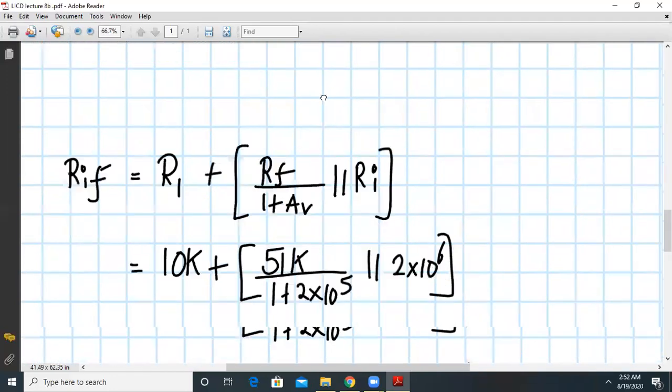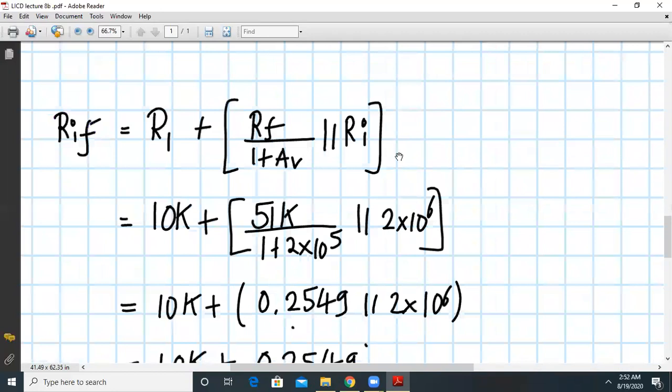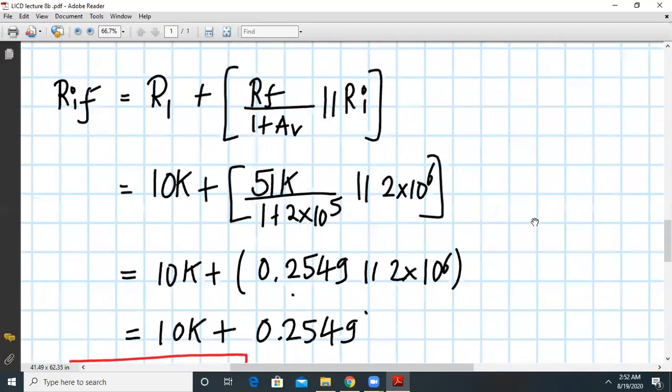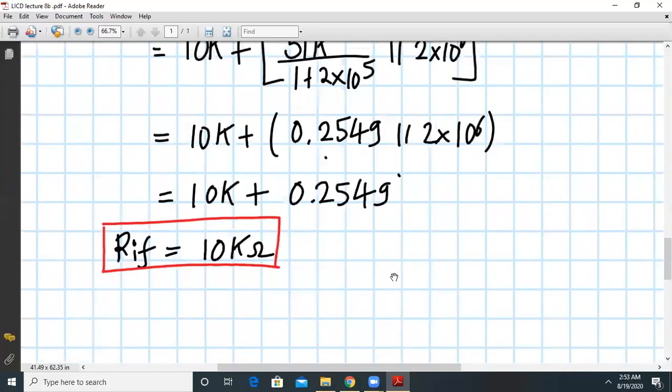Now let us see next is Rif. So Rif we know that it is equal to R1. For inverting amplifier we'll still do the analysis. So it will be original formula: Rif will be equal to R1 plus Rf divided by 1 plus Av parallel to Ri. So if you work it out, you will get close to 10 kilohm only.